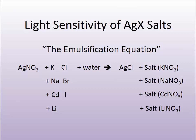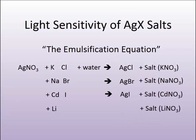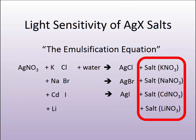When we mix a halide salt with silver, we get what's called a double replacement reaction in chemistry, and we precipitate a silver halide salt. Depending upon which halide we choose, we can obtain either silver chloride, silver bromide, or silver iodide. When we mix salts, we actually get grains which contain all three in various proportions, and each proportion has a very unique impact on its light sensitivity.